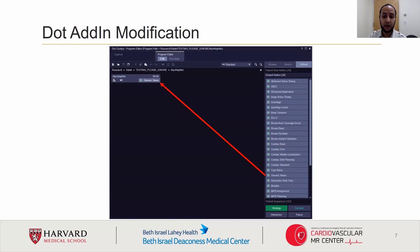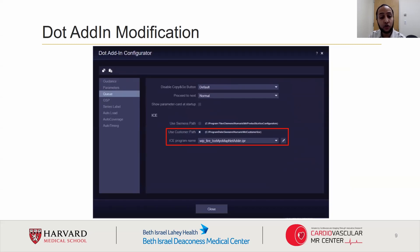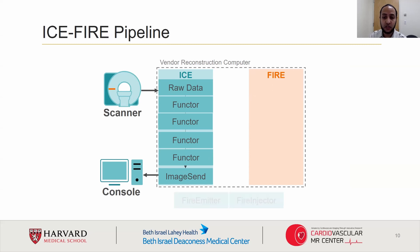In order to integrate FHIR into the ICE pipeline, we need to modify a compiled ICE program by using the generic used dot component, available under the default Add-ins tab. Once the dot add-in has been added to the sequence, you will see an Add-in Configuration button appear at the bottom left corner of the sequence. Then, under Queue, you will have the option of adding an IPR file, which adds two new functors to the ICE pipeline. These new functors will be the FHIR emitter and FHIR injector. The new functors can then be inserted into the ICE sequence and will be used to transmit data between the ICE server and the FHIR server.